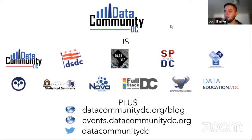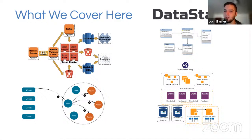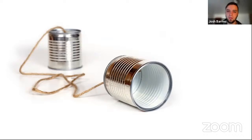You can find out more about Data Community DC at their blog, as well as upcoming events. What we cover here is everything related to Cassandra, including the surrounding ecosystem, including DataStax, Scylla as is getting presented today, Spark, Kafka — things that connect to Cassandra as well. At this point in the introduction, if anyone is new and would like to introduce themselves and tell us a little about what you do with data, feel free to do so.